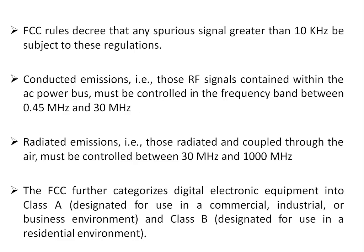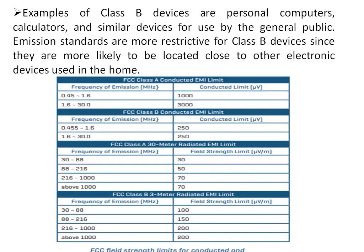FCC rules decree that any spurious signal greater than 10 kilohertz is subject to FCC rules and regulations. According to this, conducted emissions — RF signals contained on the AC power bus — must be controlled in the frequency band between 0.45 to 30 megahertz, and radiated emissions in the range of 30 megahertz to 1000 megahertz. FCC further categorizes digital electronic equipment into Class A, used for industrial, commercial, and business environments, and Class B, designated for residential environments. Examples of Class B devices are personal computers, calculators, and similar devices used by the general public.